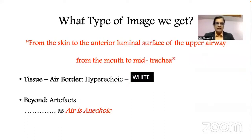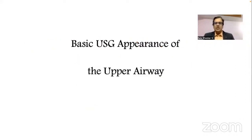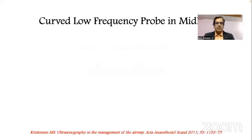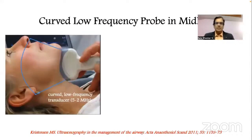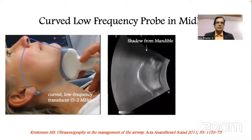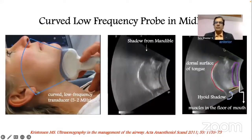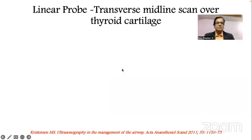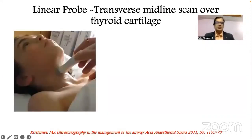When you place an ultrasound probe on the neck to examine the upper airway, the image obtained goes from the skin to the anterior luminal surface — basically from the mouth to the midtrachea. There is always a tissue-air border which is hyperechoic and appears white; beyond this we have artifacts because the airway is anechoic. When using a curved low-frequency probe in the midline from the chin to the hyoid bone, you get a shadow from the mandible in the upper part and the hyoid shadow in the lower part.